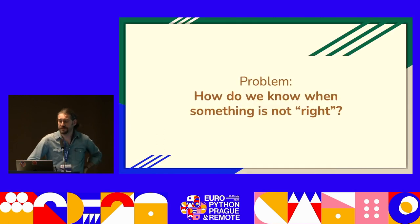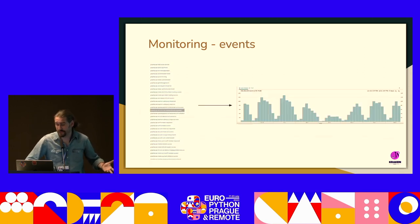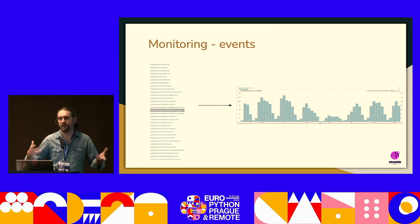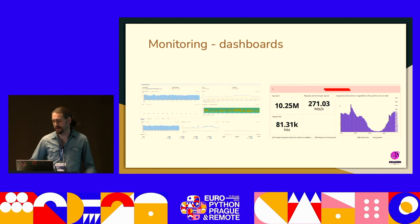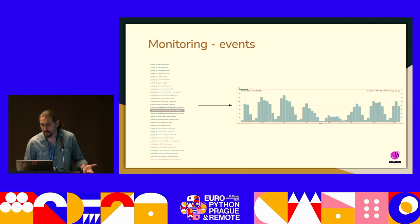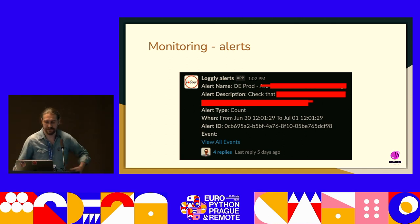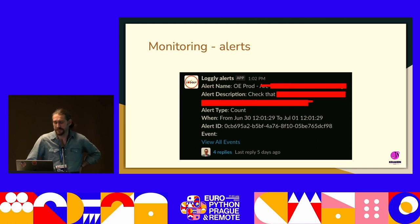Another problem is knowing when something is not right — performance issues, error rates, what's been requested, how things perform. You definitely need good dashboards, some event monitoring, and alerts that say something doesn't look right so you could be notified in Slack. These are real must-haves.